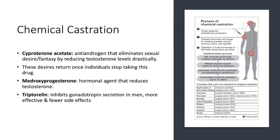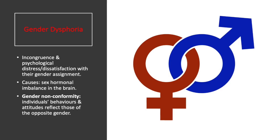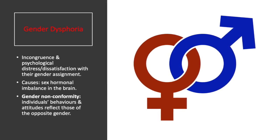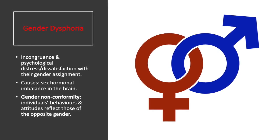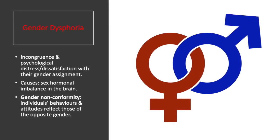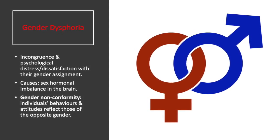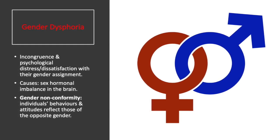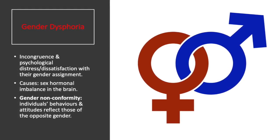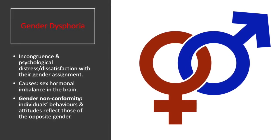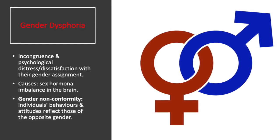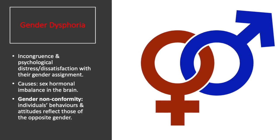Finally, I will discuss gender dysphoria, transgenderism, and its treatment. Gender dysphoria is incongruence and psychological distress or dissatisfaction with one's gender assignment. A possible cause may be sex hormonal imbalance in the brain, though more research is needed.